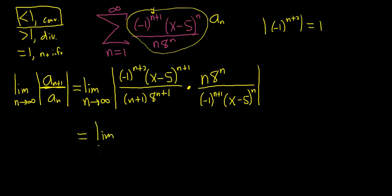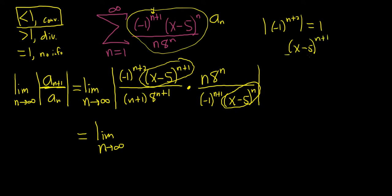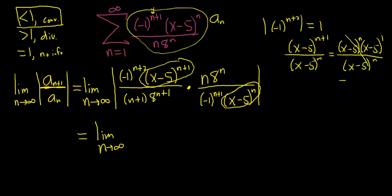Let's write down the limit sign again as n approaches infinity. What about the x minus 5's? We have x minus 5 to the n+1 over x minus 5 to the n. We can break up the numerator as x minus 5 to the n times x minus 5 to the 1, all divided by x minus 5 to the n. These cancel and you're left with simply x minus 5.